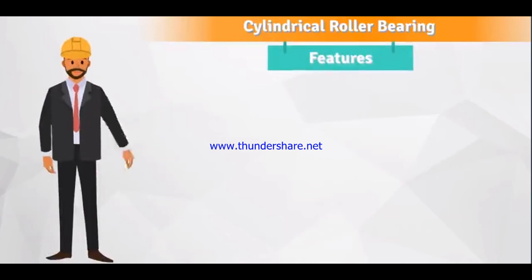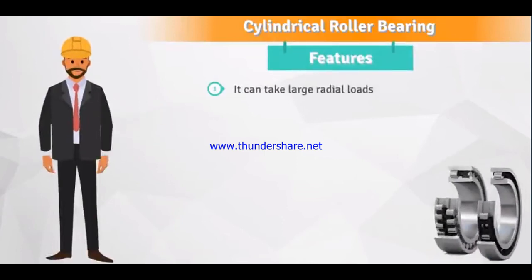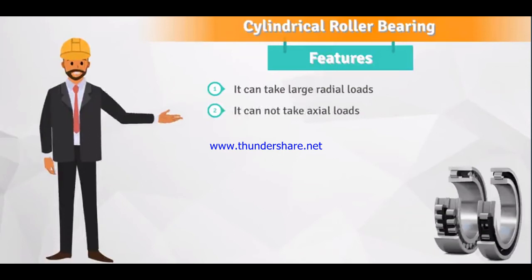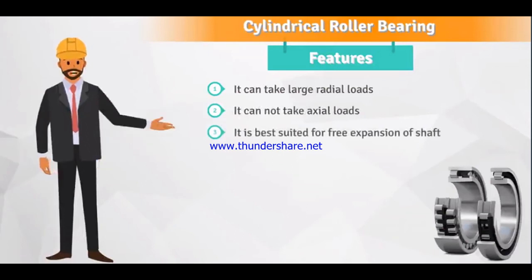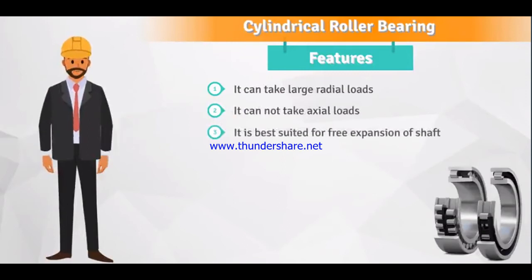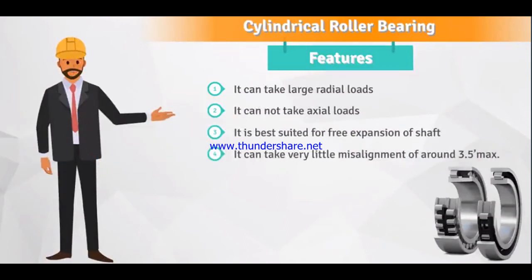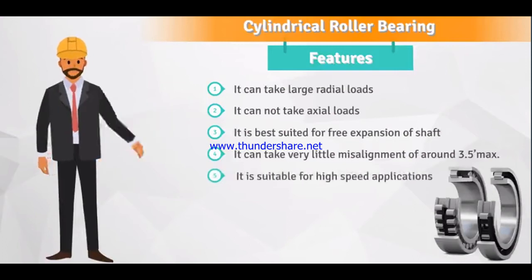Cylindrical roller bearings are equipped with several features. First, they can take large radial loads. Second, they cannot take axial loads. Third, they are best suited for free expansion of shaft. Fourth, they can take very little misalignment of around 3.5 minutes maximum.